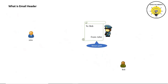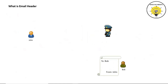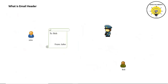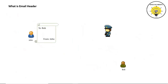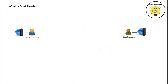The return path is used to return this letter in case Bob's address is not found. If the postman is able to find the recipient address, he will deliver this letter to Bob. If he doesn't find the address, he will return this letter to the address mentioned in the 'From' field. An email is delivered in the same way.